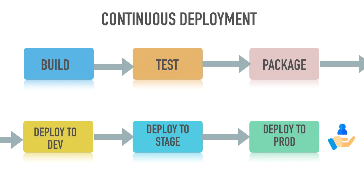That's what we would call continuous deployment. Continuous deployment is an extension to continuous integration where you go all the way to production with every change you make to your mainline code. You have the confidence to do that because you've automated most of the testing and your testing is comprehensive enough — only then does continuous deployment make sense.